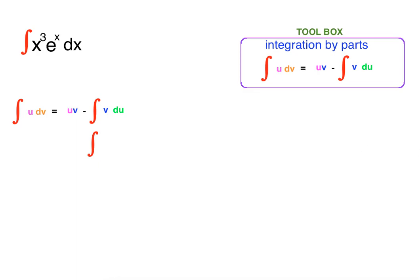Let's start with integration by parts. First, we have to define what our u and dv are. Our u will be x to the third and our dv will be e to the x. If u is x cubed, then du is 3x squared dx. If dv is e to the x, then v is also e to the x, since the anti-derivative of e to the x is e to the x.